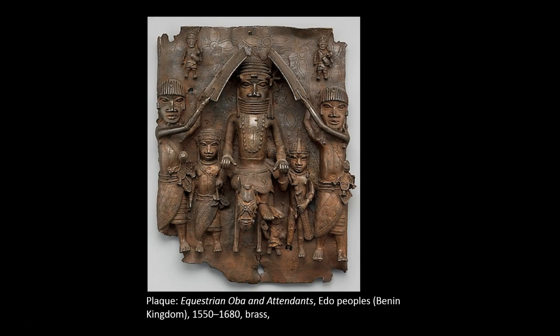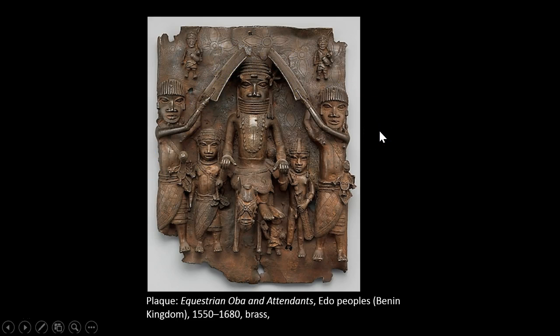This is one of the first sculptures we're going to be looking at. It's a brass plaque dated between 1550 and 1680, and it depicts an oba (O-B-A) — the king — and his attendants from the Benin Empire, a powerful kingdom located in present-day Nigeria. We know that the central figure is the oba because of his distinct coral beaded regalia, and also his attendants who hold shields above his head, either to protect him from attack or possibly from the hot tropical sun — a privilege only afforded to an oba.